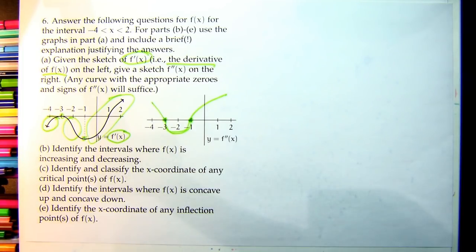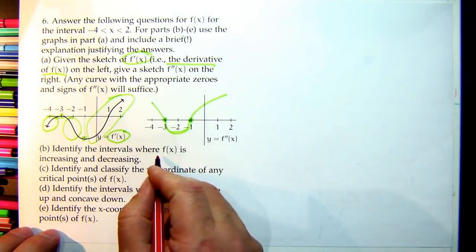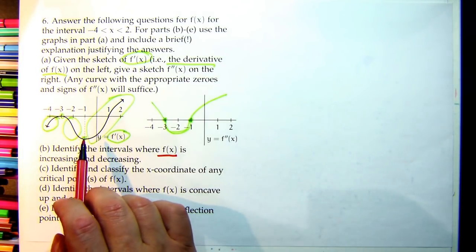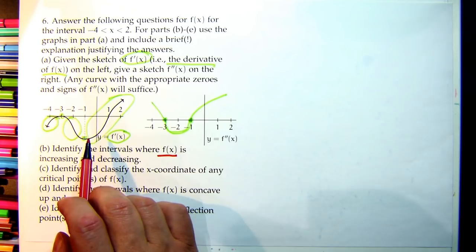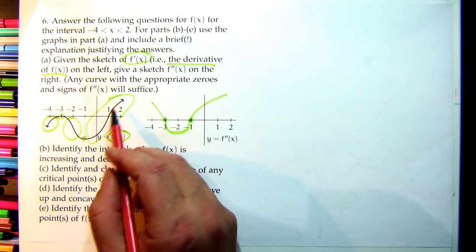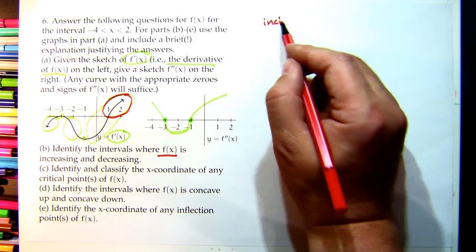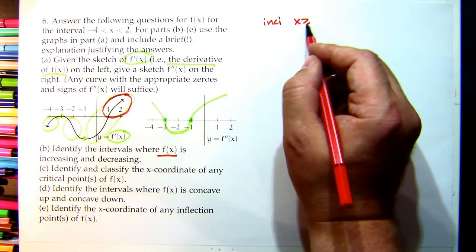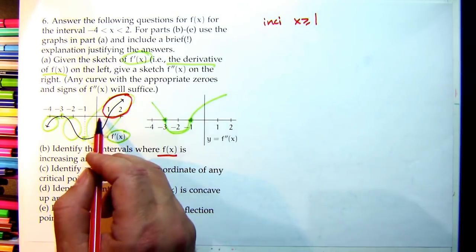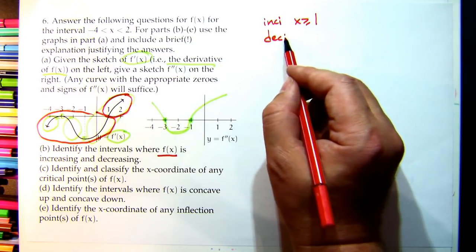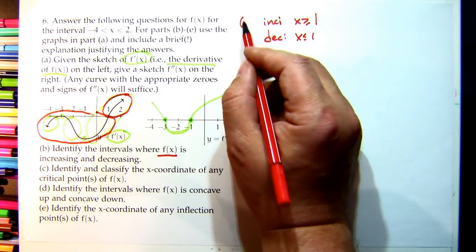Part B: where is f(x) increasing or decreasing? Look at f' (the given graph). f is increasing where f' is positive — that's for x ≥ 1. f is decreasing where f' is negative — that's for x ≤ 1.